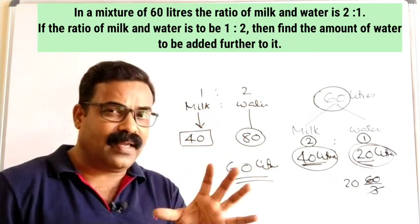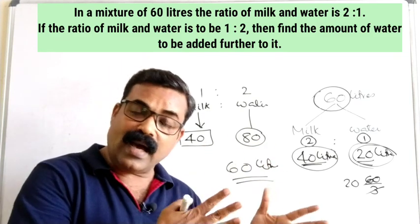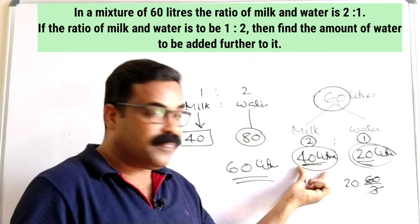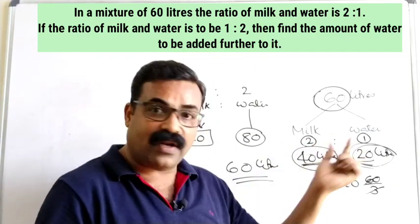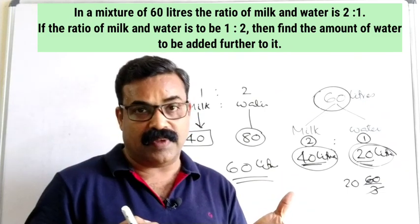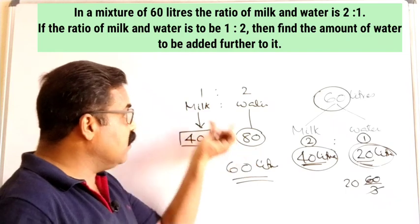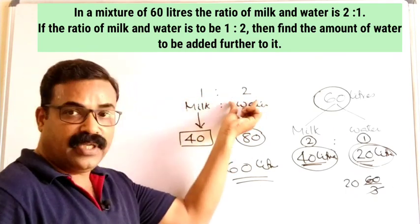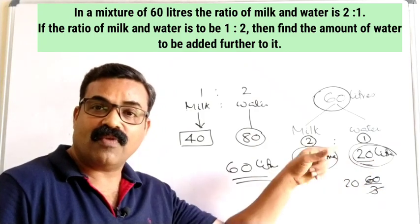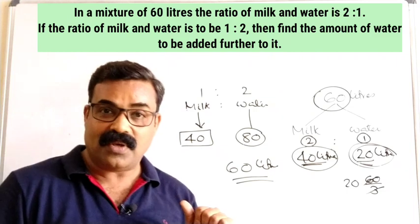To recap: 60-liter mixture has milk and water in ratio 2:1, giving 40L milk and 20L water. To change to ratio 1:2, milk stays at 40L so water must become 80L (double the milk). We already have 20L water, so 60 more liters of water must be added. Mark 60 liters as the correct answer.